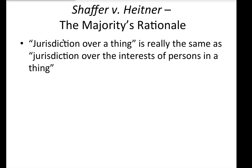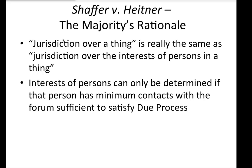What's important to understand is the majority's rationale. Why does International Shoe trump the traditional basis of attachment of property at the outset? The court said jurisdiction over a thing — the property present in the forum state — is really the same as jurisdiction over the interests of persons in that thing. A court cannot adjudicate anything about the property itself without also adjudicating the interests of the persons in it. Further, the interests of persons can only be determined if that person has minimum contacts with the forum sufficient to satisfy due process — that is, the International Shoe minimum contacts standard.